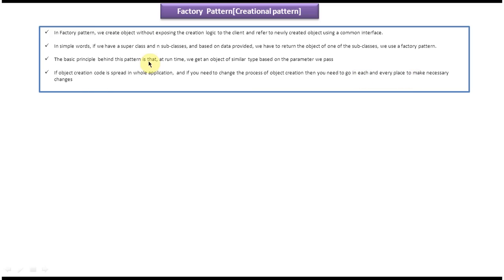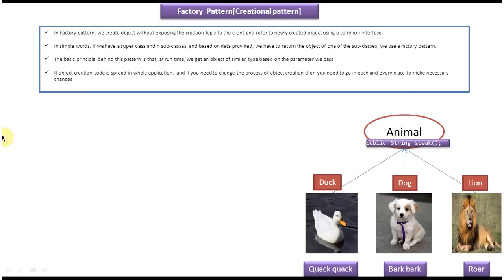So these are the four explanations. To understand these four statements, I have created the below diagram. Here you can see animal — this animal is the super class and it has a public string speak method. And this animal is extended by three classes: first one is duck, second one is dog, and third one is lion.